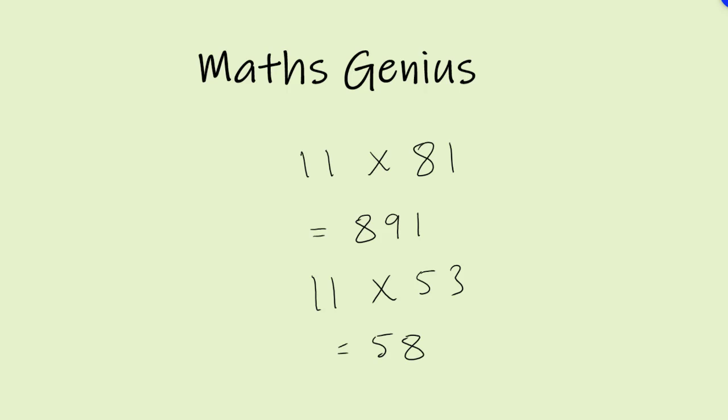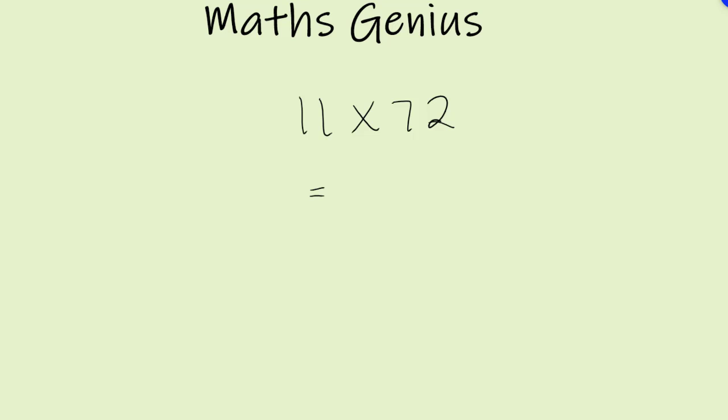So let's try one more. Add 7 and 2 and place the number between 7 and 2. Do you have 792? Yes, well done. Let's try one more. 11 times by 42. Okay, you got it right this time. You're going quick at this now. 462.